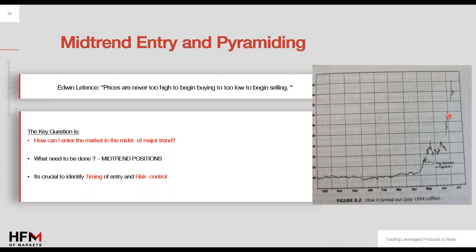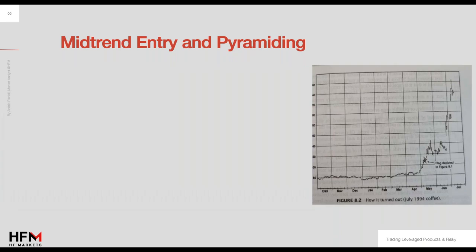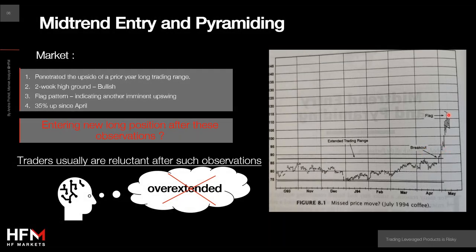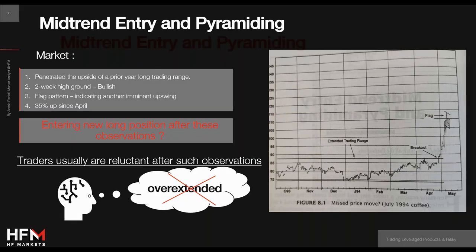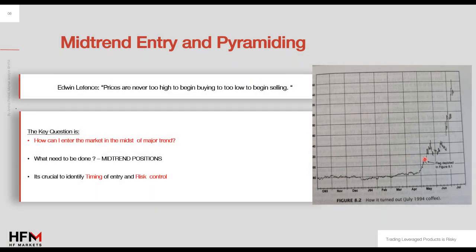Look where it ended. The flag was at around $115, but the price ultimately reached $260 — more than double. It was five times the advance from the flag level to the ultimate high.